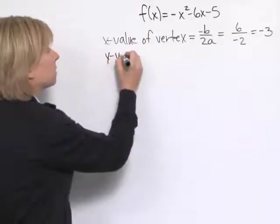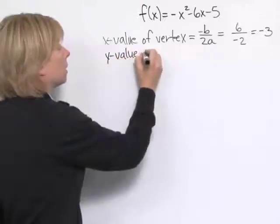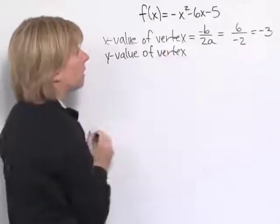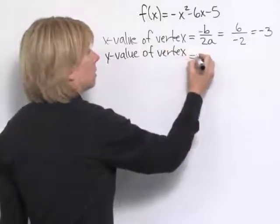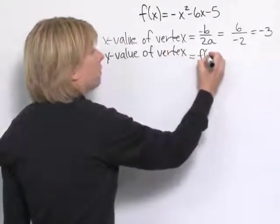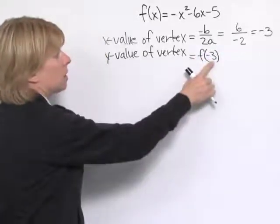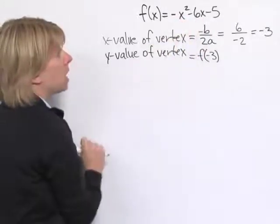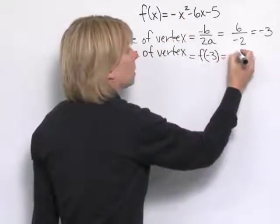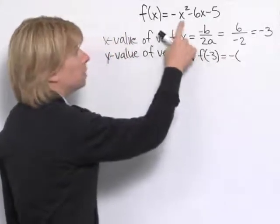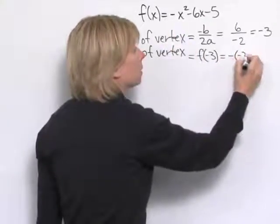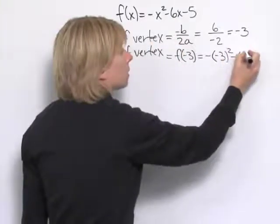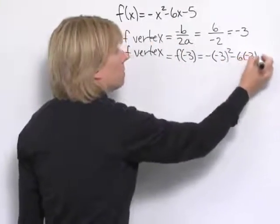To find the y-value of the vertex, we need to evaluate the function for this x-value. In other words, find f(-3). So that means take -3, put it in for each x in the function. So our first term, (-3)² - 6(-3) - 5.